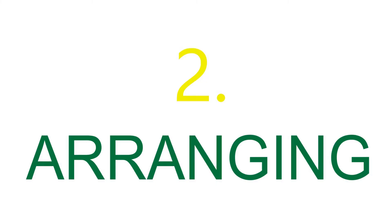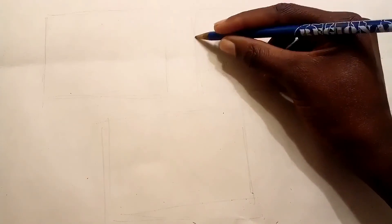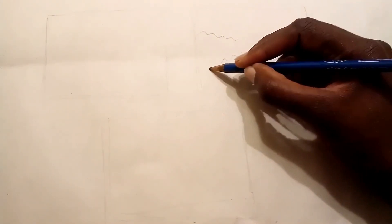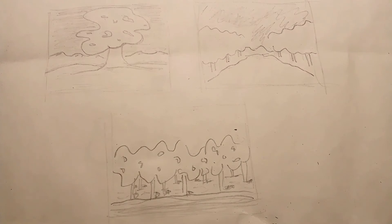Second is arranging. Arranging is deciding where the forms or figures will go in the piece. This is where you decide the type of composition that you want to use. Remember, each composition type focuses your viewer's attention on different things, so definitely sketch out a few types of arrangement so you can get different perspectives of what you're drawing or painting.